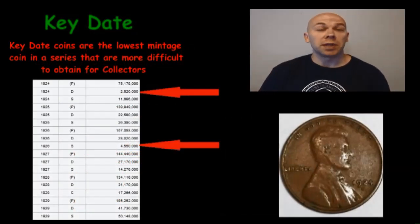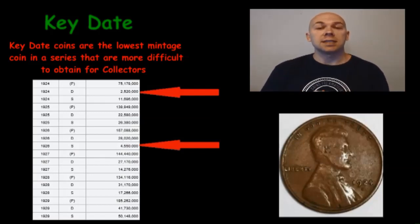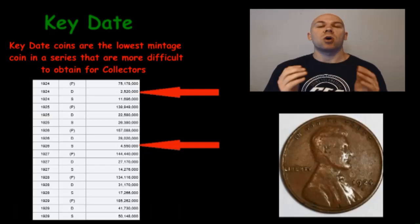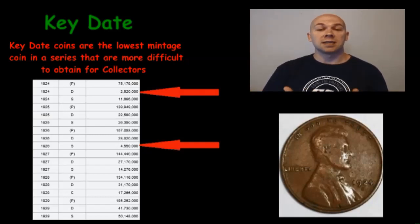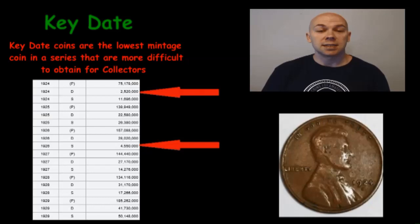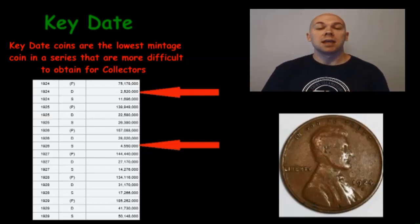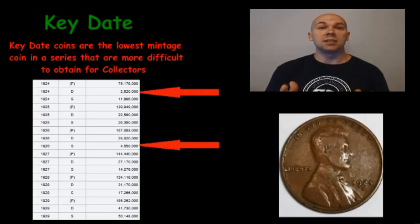Key date is a common term you will hear with coin collectors. Key date coins are the coins in a particular series that collectors strive to get because they are harder to obtain than the others. For example, here's a list of mintages — meaning the total number of coins produced — for the Lincoln wheat cent series from 1924 through 1929. The 1924-D and the 1926-S had far fewer coins produced than the other years and mints, making these two key dates harder to find in especially good condition.